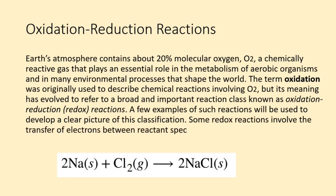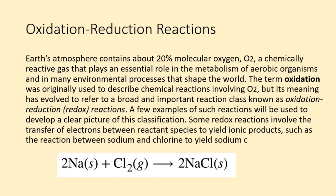A few examples of such reactions will be used to develop a clear picture of this classification. Some redox reactions involve the transfer of electrons between reactant species to yield ionic products, such as the reaction between sodium and chlorine to yield sodium chloride.